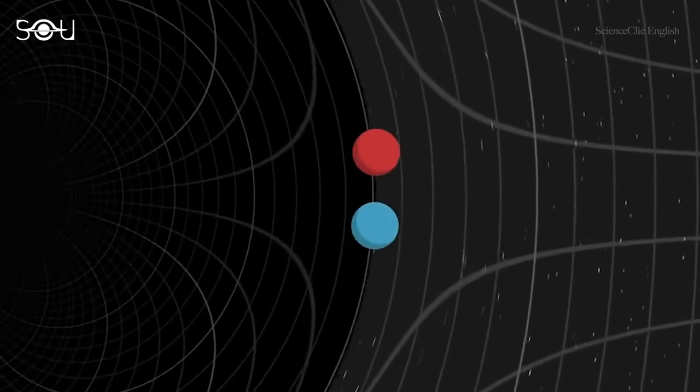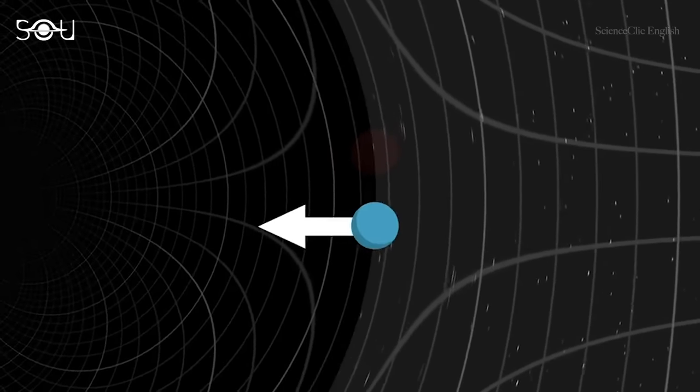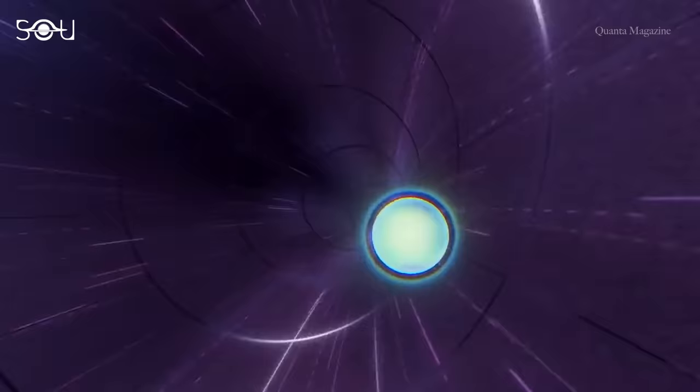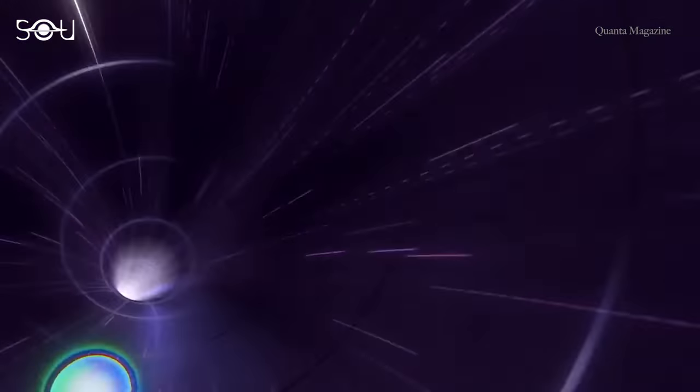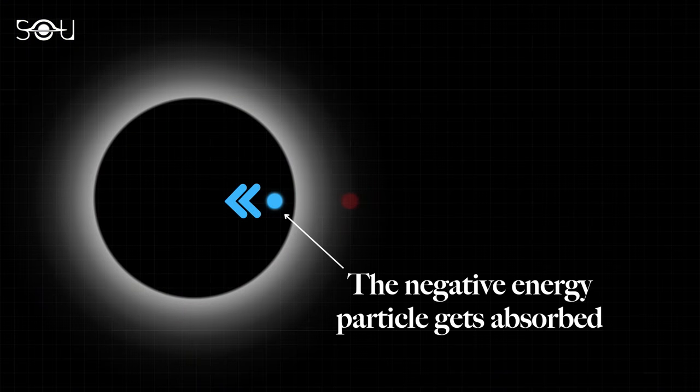However, there is another twist. Sometimes the negative energy particle crosses the event horizon and gets absorbed by the black hole, but on one condition that the particle moves radially inwards towards the black hole. So the negative energy particle from the vacuum fluctuation gets absorbed by the black hole without violating the uncertainty principle.